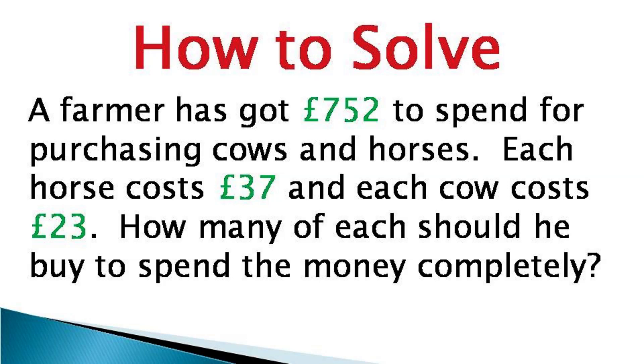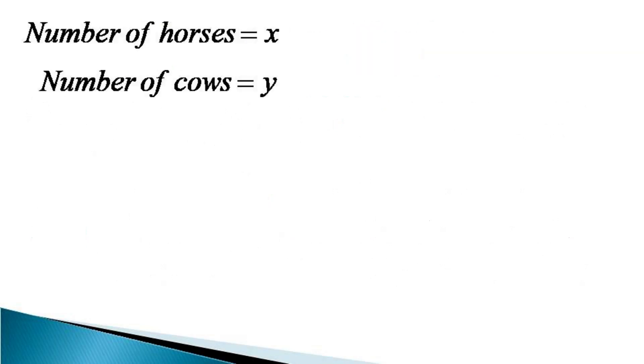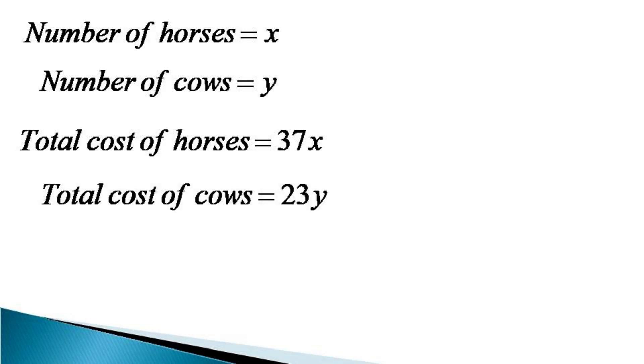So to solve such kind of problems, first we need to make an algebraic equation. The first step in this direction is to assume the number of horses and number of cows. So we assume that number of horses are x and number of cows is y, and the total cost of horses comes out to be equal to 37x pounds and total cost of cows comes out to be equal to 23y pounds and the total money available is 752 pounds.